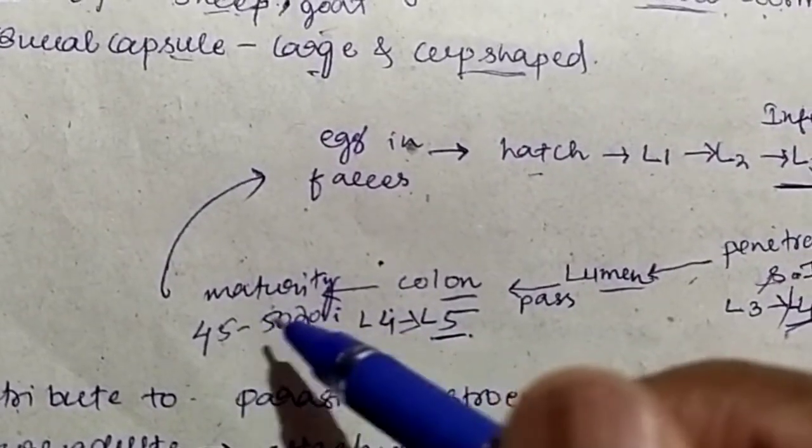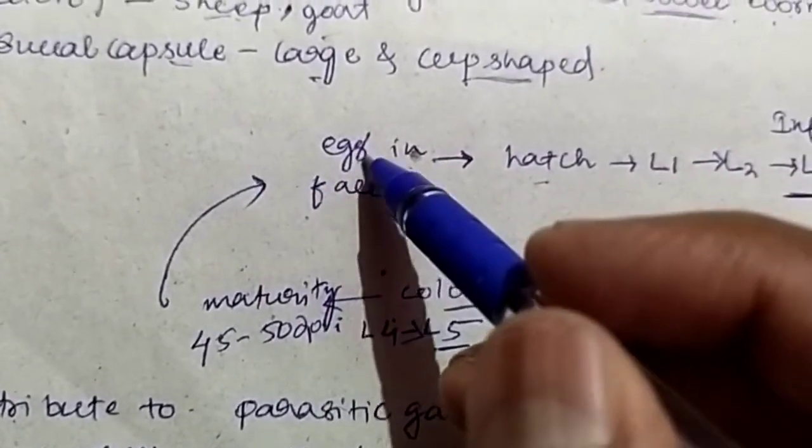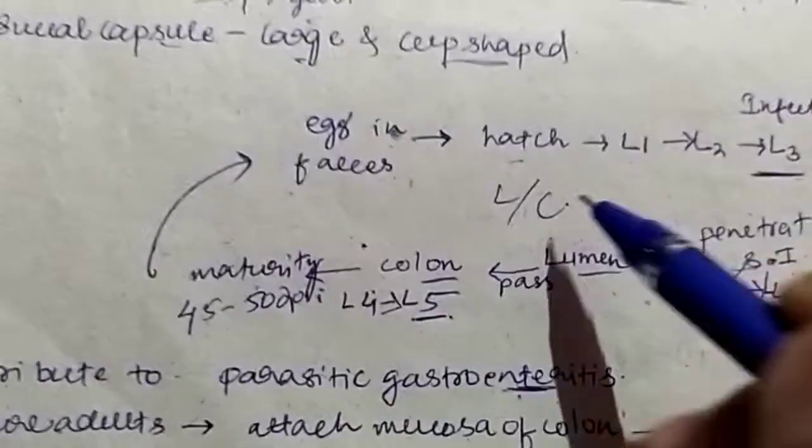After 45 to 50 days of infection, it will again start laying eggs and those eggs are passed in the feces of the host. This is the life cycle of Chabersia ovina.